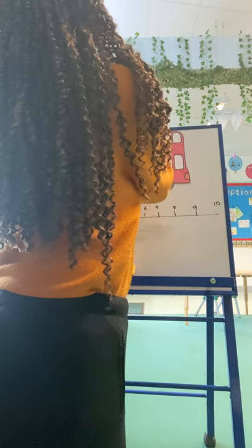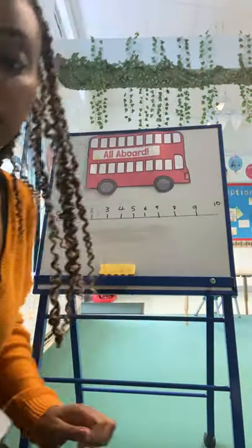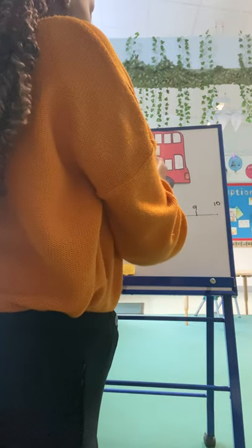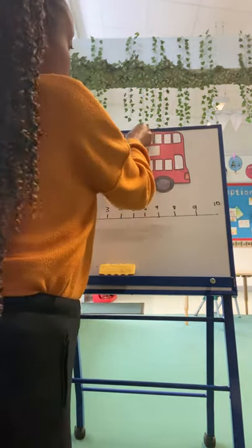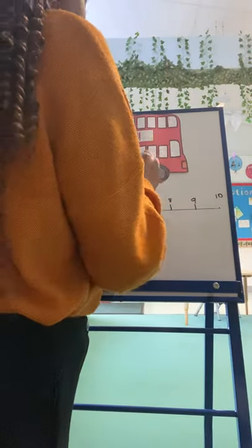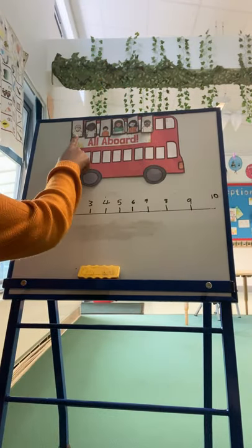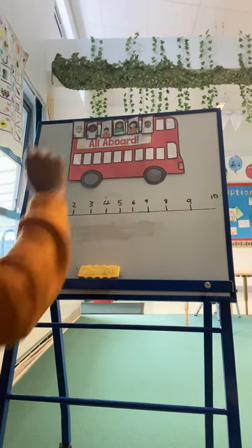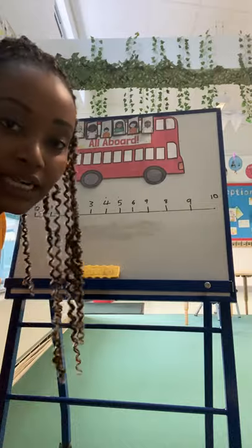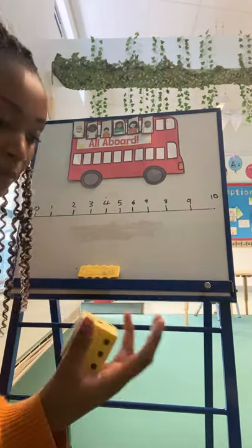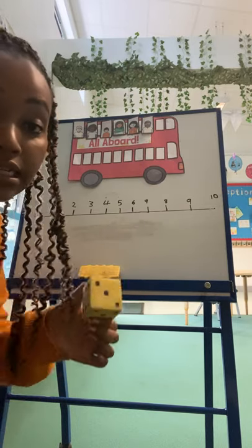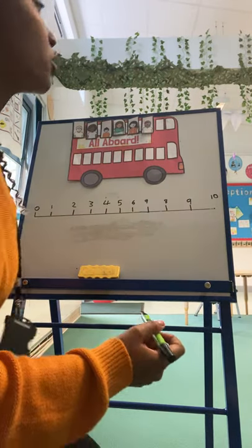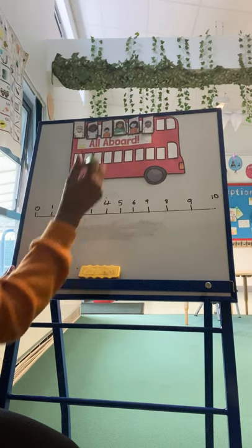Now, let's try the same but with takeaway. I'm going to start with one, two, three, four, five, six people on our bus. Let's double check. One, two, three, four, five, six people on our bus. Now, some people are going to get off our bus at the second stop. We're going to roll our dice to see how many people are going to get off the bus. What number do we have? One, two, three. Three people are going to get off our bus. How many people do we have on the bus at the moment? One, two, three, four, five, six. We have six people.